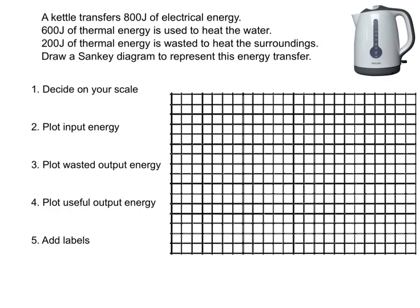So let's have a go at drawing the Sankey diagram for this kettle. A kettle transfers 800 joules of electrical energy. 600 joules of thermal energy is used to heat the water. 200 joules of thermal energy is wasted to heat the surroundings. Draw the Sankey diagram to represent this energy transfer.